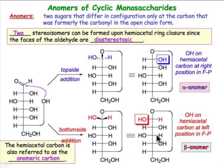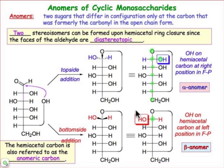The last point here is how to always recognize the anomeric carbon. The anomeric carbon is the only carbon that has two oxygens bound to it. All other carbon atoms have at most one oxygen bound to them. So in a cyclic hemiacetal sugar, you should always look for the carbon atom with two oxygens bound to it — that's the reference point, that's the anomeric carbon.